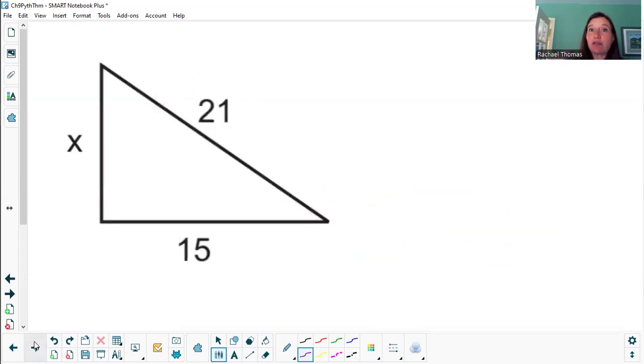In this example, this is our last example for this little video, x is a, is a smaller side. It's not the c. So when I write out my a squared plus b squared equals c squared statement, I say x squared plus 15 squared equals 21 squared. And now I've got to actually do some computation here in the middle, instead of just typing it all in my calculator.